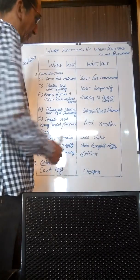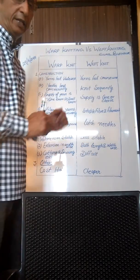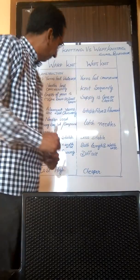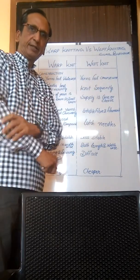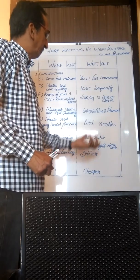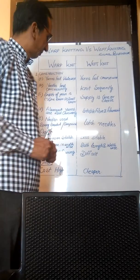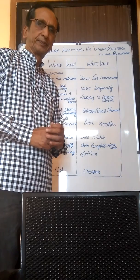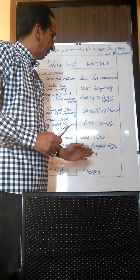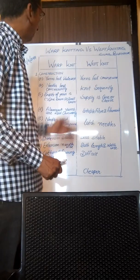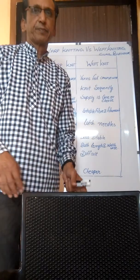Now regarding the most important point — that is the properties of the fabric — which is where I got my answer. The warp knit fabrics are more dimensionally stable as compared to weft knit. Another point of difference is that extension in warp knit is widthwise only, while in weft knit it is in both length and widthwise. Another advantage of warp knit fabric is that cutting and sewing is easy, while in weft knit, cutting as well as sewing is difficult. Also, the cost of warp knit fabrics is higher as compared to weft knit.